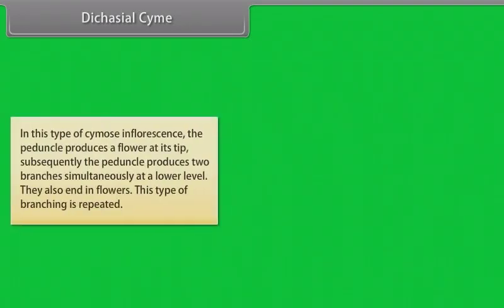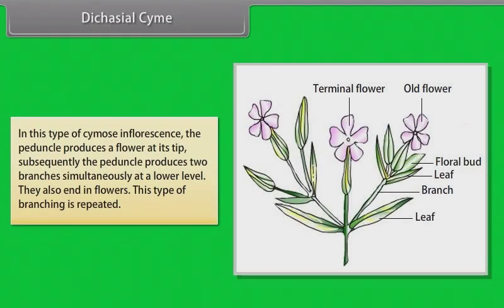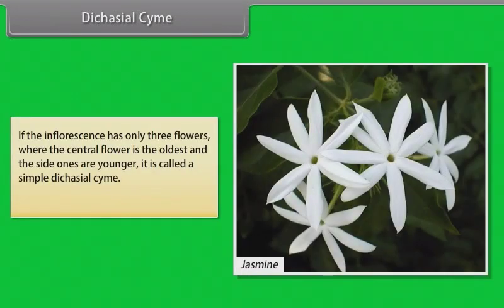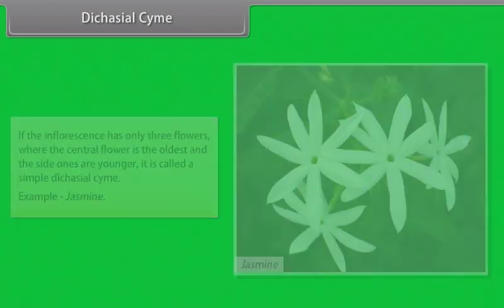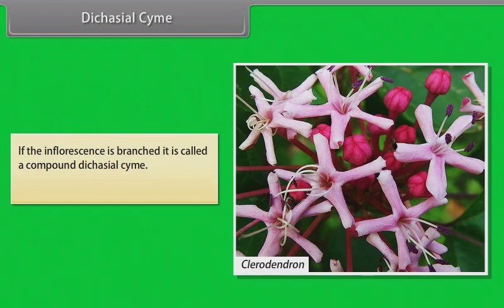In dicasial cyme, the peduncle produces a flower at its tip; subsequently the peduncle produces two branches simultaneously at a lower level, and they also end in flowers; this branching is repeated. If the inflorescence has only three flowers where the central flower is the oldest and the side ones are younger, it is called a simple dicasial cyme — example: Jasmine. If the inflorescence is branched, it is called a compound dicasial cyme — example: Clerodendron, Rysia.